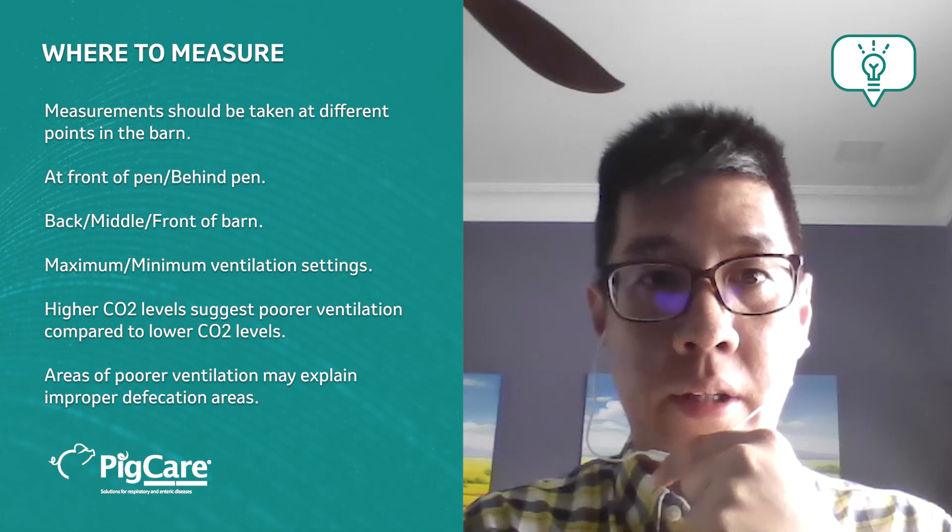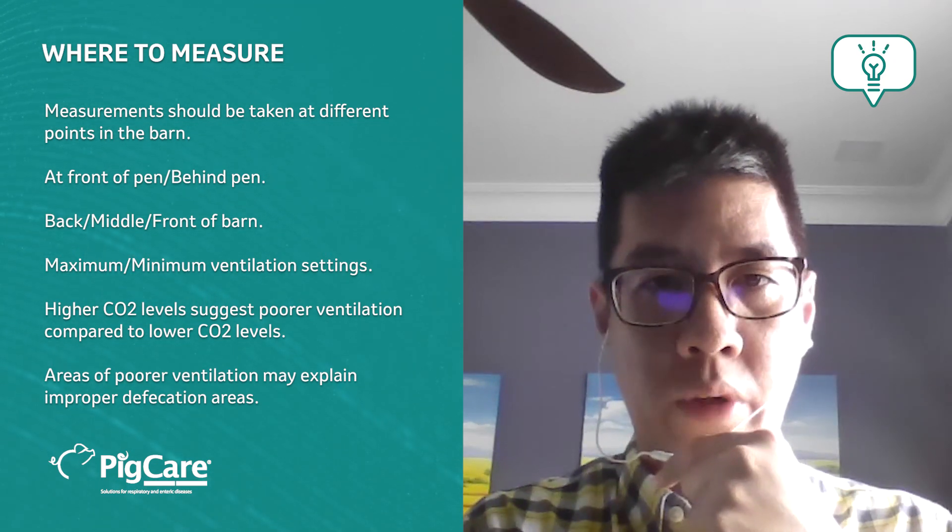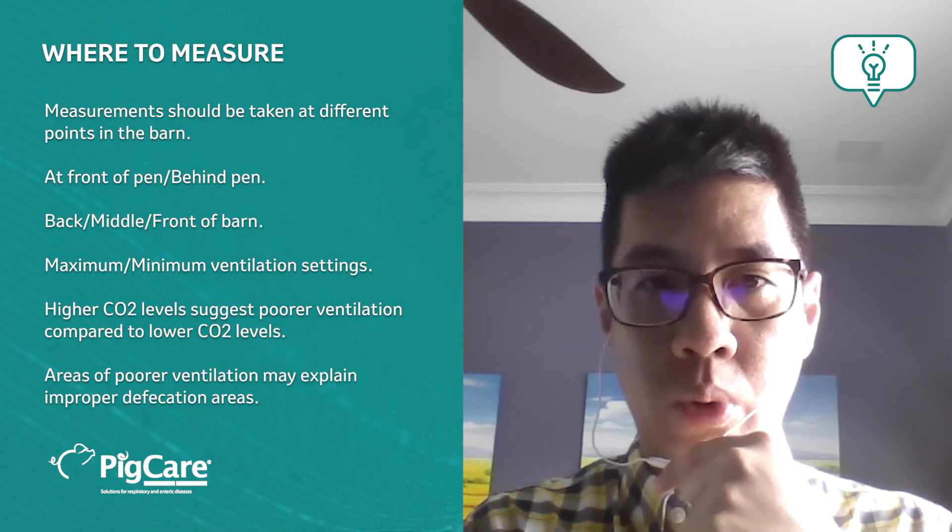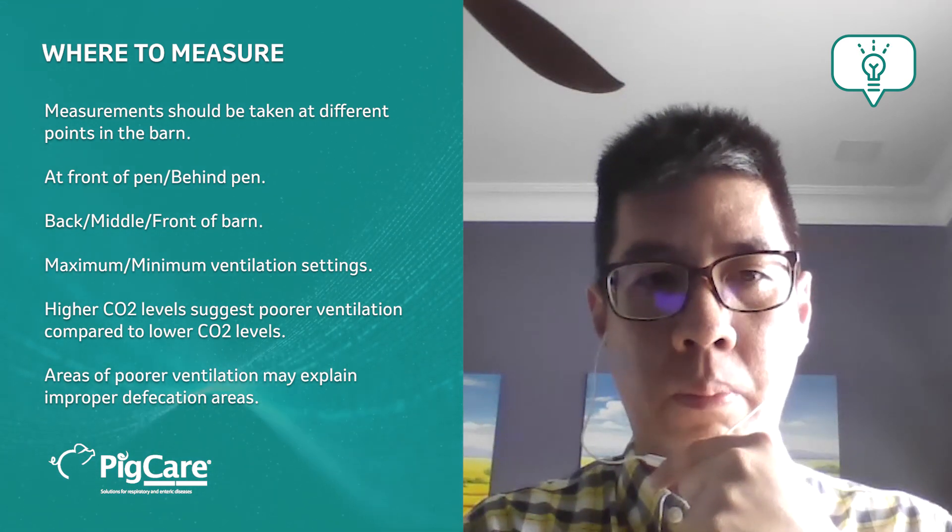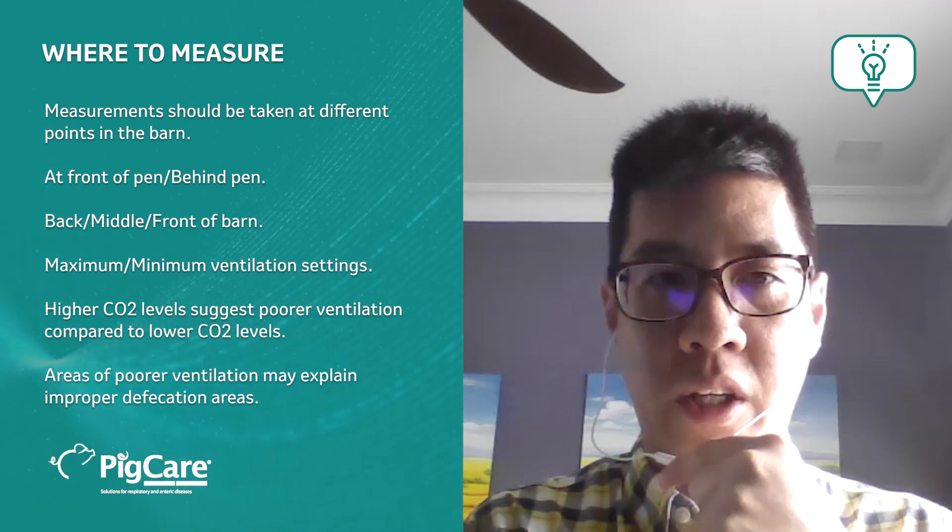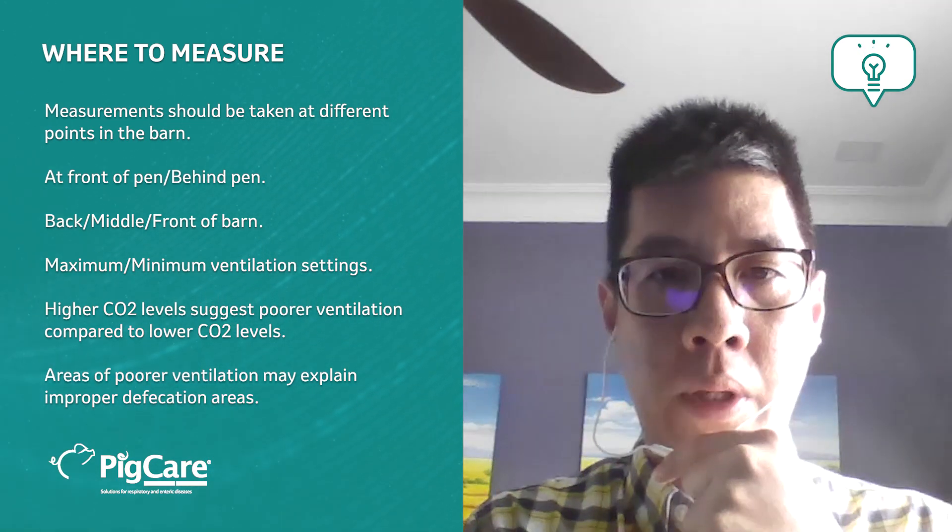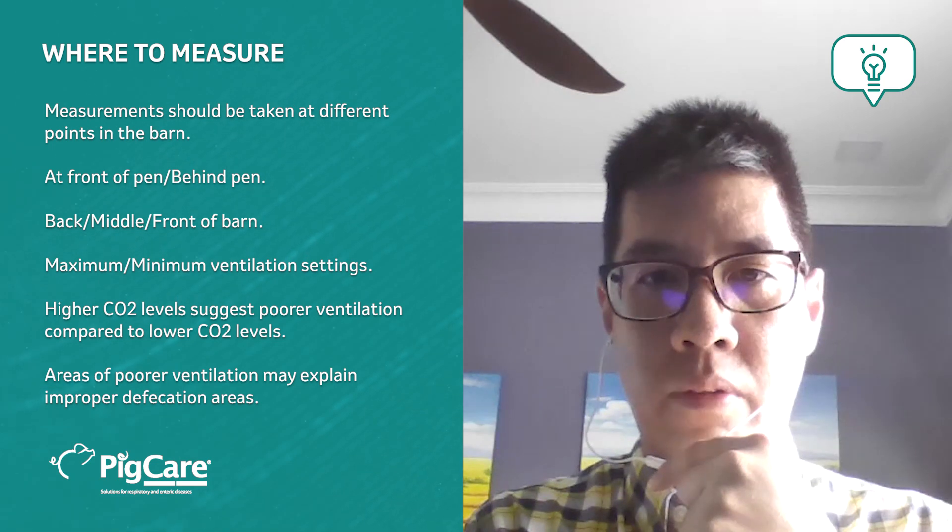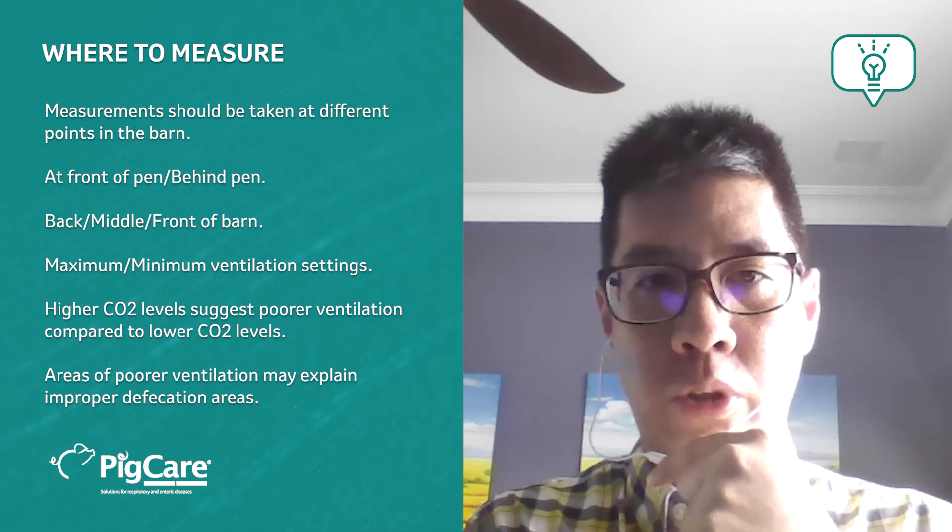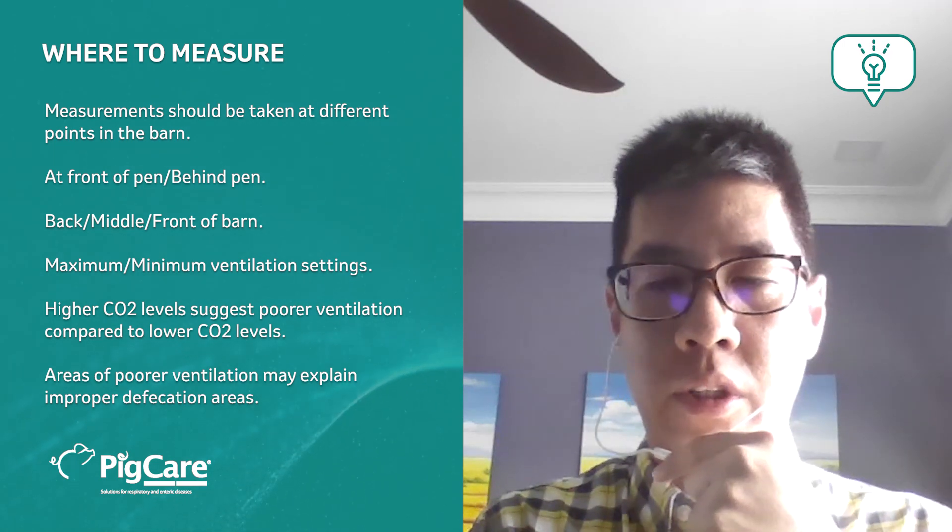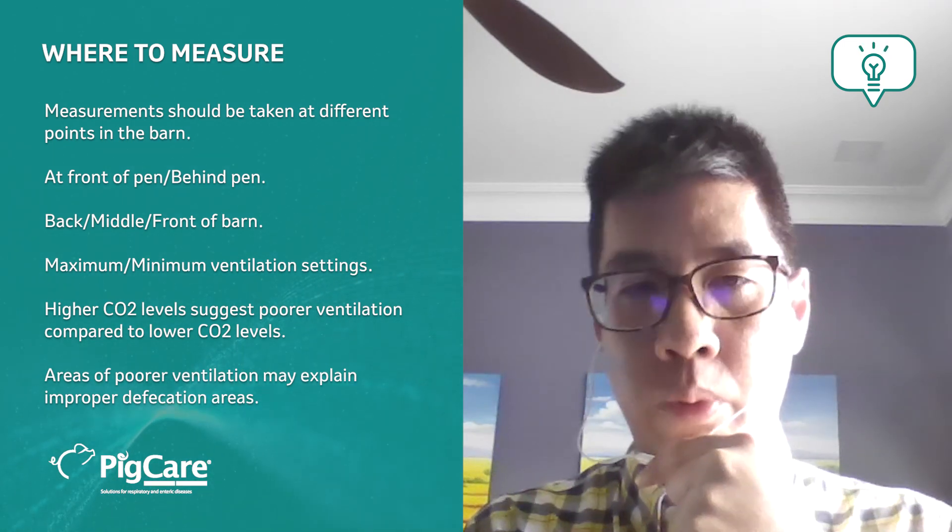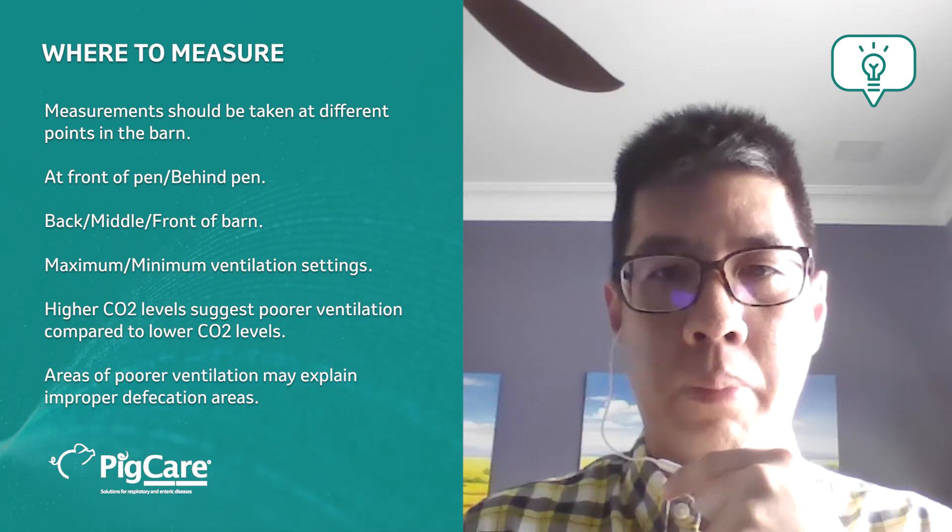Higher CO2 levels would suggest poorer ventilation compared to lower CO2 levels. One interesting thing to note is that areas of poorer ventilation may explain improper defecation areas. Pigs will defecate at areas where they feel discomfort and choose to lie down in areas where they feel more comfortable. So areas of poorer ventilation identified on the CO2 meter may help to explain these improper defecation patterns.